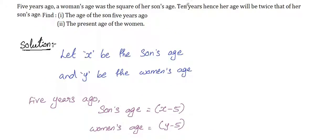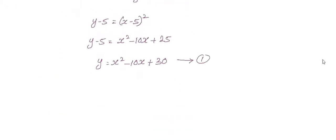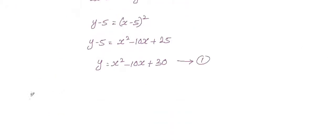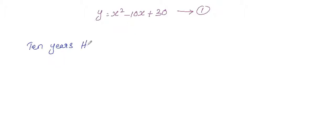10 years hence her age will be twice her son's age, so we can write the equation as y equals 2x plus 10. Let's call this Equation 2.